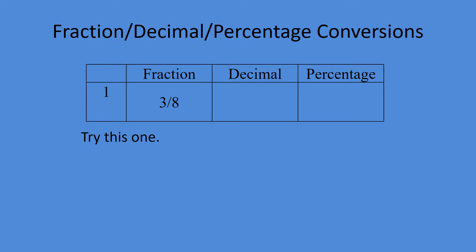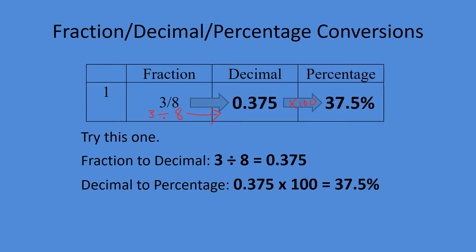For this next example, let's do three eighths. So three divided by eight will give us 0.375. To go to percentage, multiply by 100 and we get 37.5%.